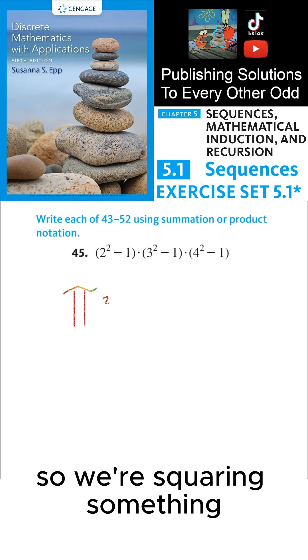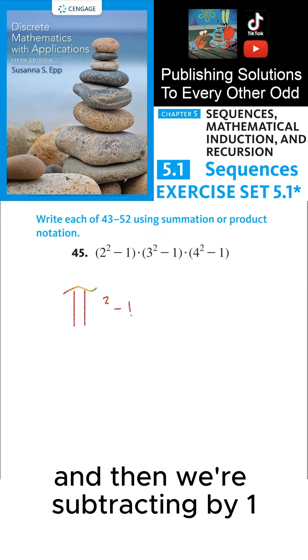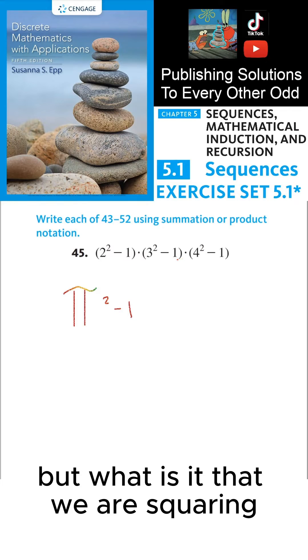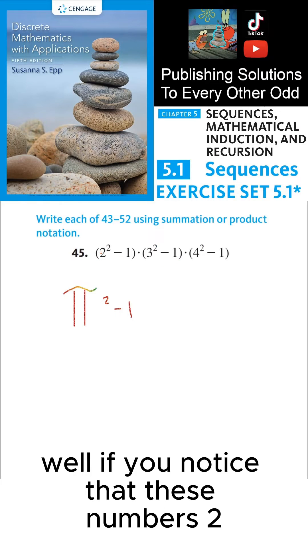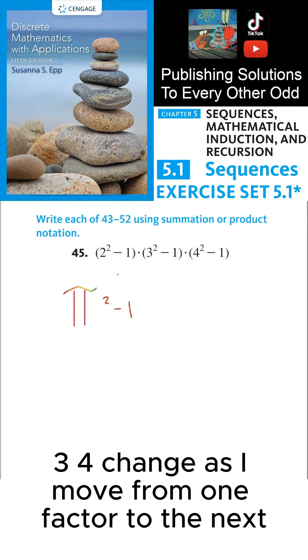So we're squaring something and then we're subtracting by 1. But what is it that we are squaring? Well, if you notice that these numbers 2, 3, 4 change as I move from one factor to the next.